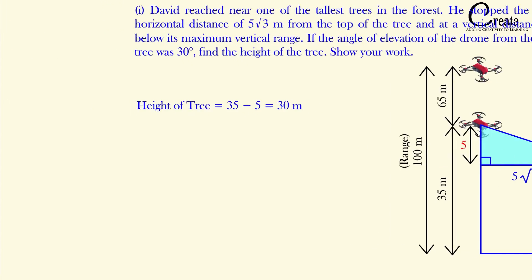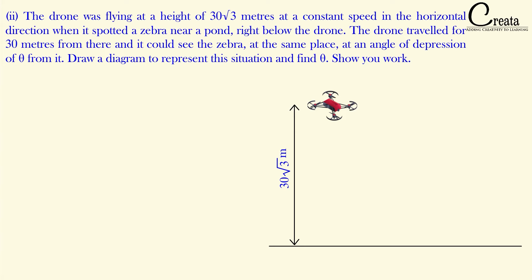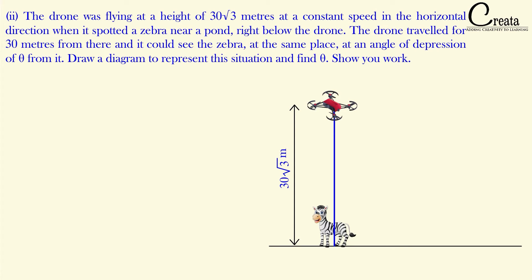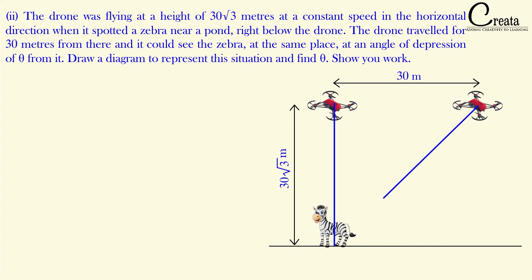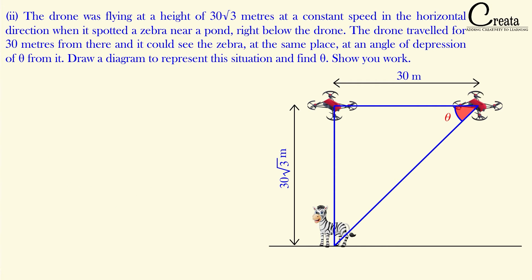Let's move to the second part. The drone is flying at a height of 30√3 meters at constant speed in a horizontal direction, and it spotted a zebra right below the drone. After that the drone moved forward in the horizontal direction. After 30 meters, the drone again observed the zebra — now the zebra is at a horizontal distance of 30 meters. The angle of depression θ is formed. Note: angle of depression is always with respect to the horizontal line, not the vertical line.